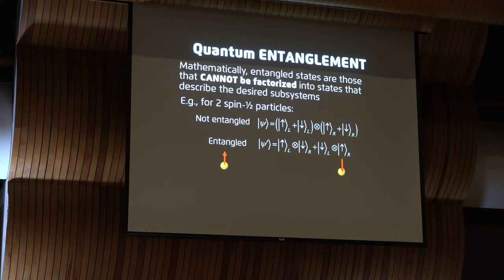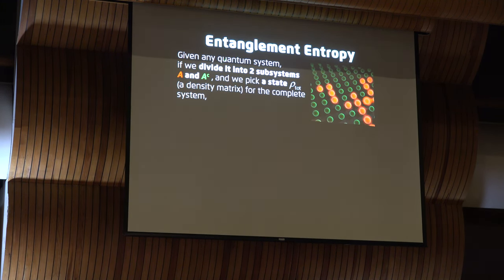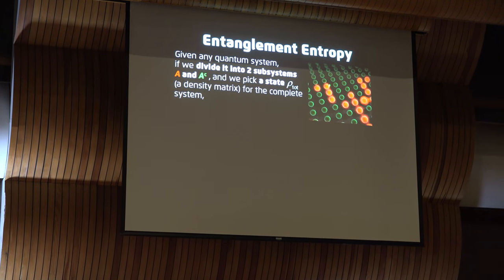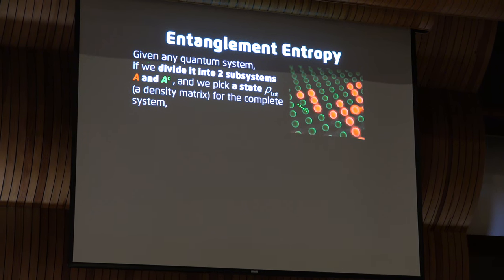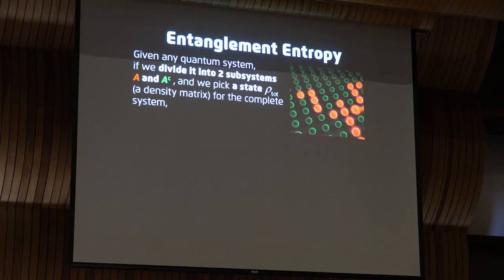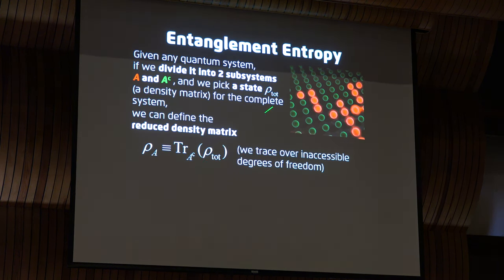How can we quantify this notion? Given any quantum system, we first need to split it into two subsystems — we choose a particular bipartitioning. I'm illustrating that here in a lattice of atoms: I divide it into the atoms in red, which I call set A, and then the complement in green. Beyond this division of degrees of freedom, we also choose the specific state for our overall system, expressed generally as a density matrix ρ_total. Then we take the trace over the degrees of freedom in the complement — we're summing over all possible states of those degrees of freedom not accessible to us in an experimental sense.